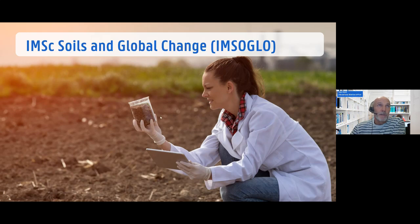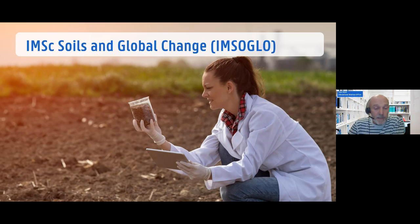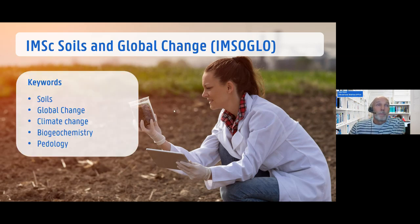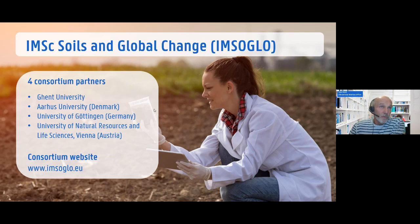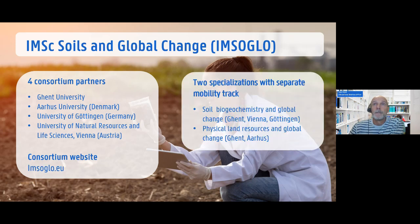The second Erasmus program is MUST — the International Master in Soils and Global Change. Global changes affect our planet in many ways, and effects on soils are often underestimated. This program trains creative and smart researchers to develop strategies to heal and strengthen soil resilience, which is crucial for many aspects of society beyond agriculture. The partners are Ghent as coordinator, Aarhus in Denmark, Göttingen in Germany, and Natural Resources and Life Sciences University in Vienna. There are two specializations: Soil Biochemistry and Global Change, and Physical Land Resources and Global Change.